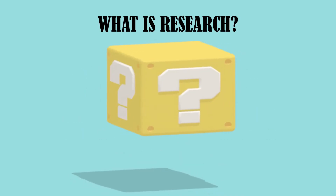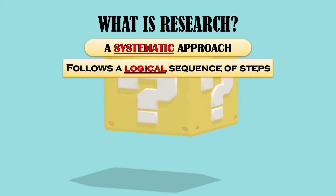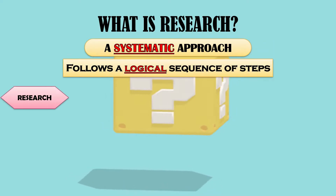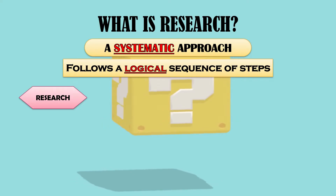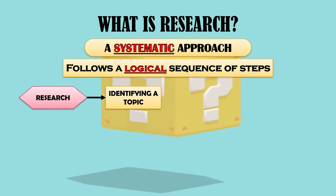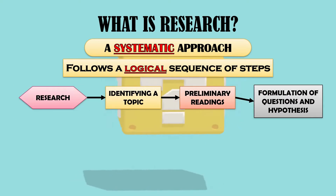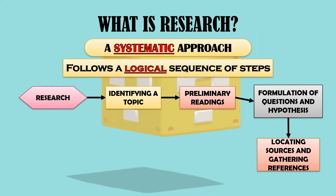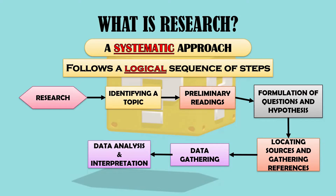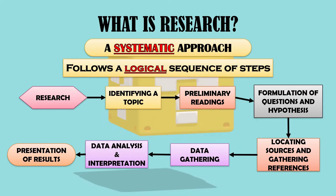When we say that research is a systematic approach, it means that it follows a logical sequence of steps. The research process involves multiple steps, starting with identifying a topic, followed by conducting preliminary readings, the formulation of questions and hypotheses, locating sources and gathering references, data gathering, data analysis and interpretation, and lastly, the presentation of results.